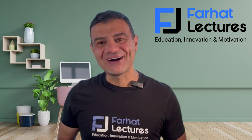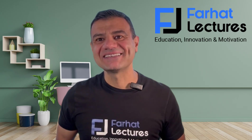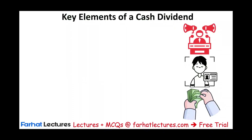We will start by looking at key elements of cash dividend — specifically, three key dates. There are three key dates that you need to understand: the meaning of each date and what happens on that particular date.